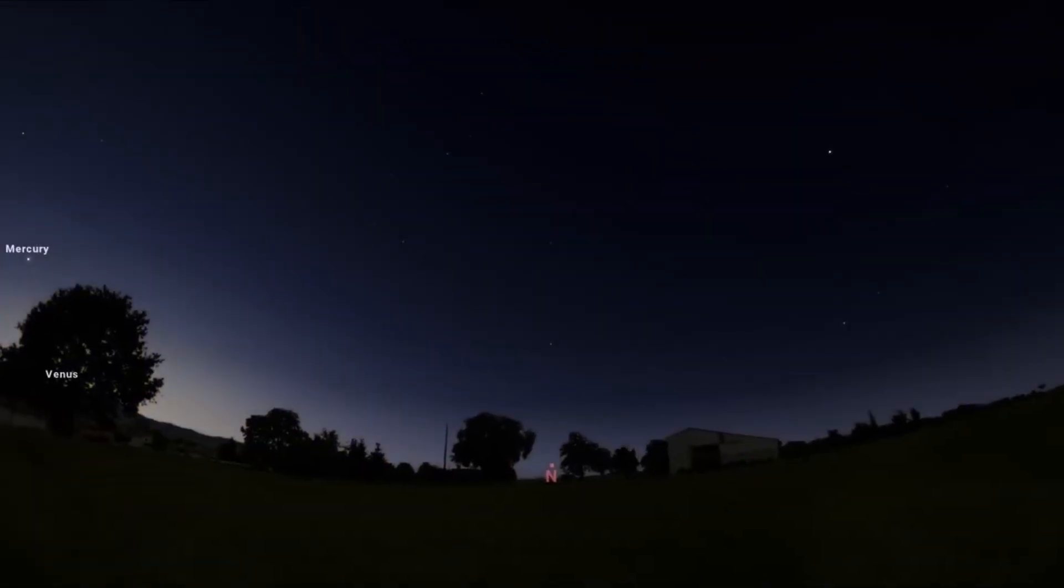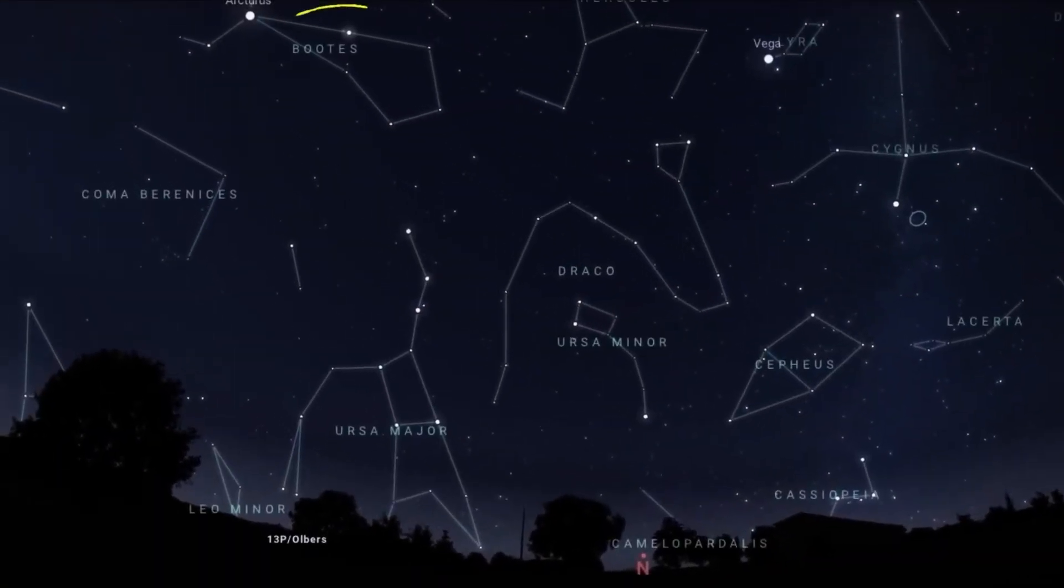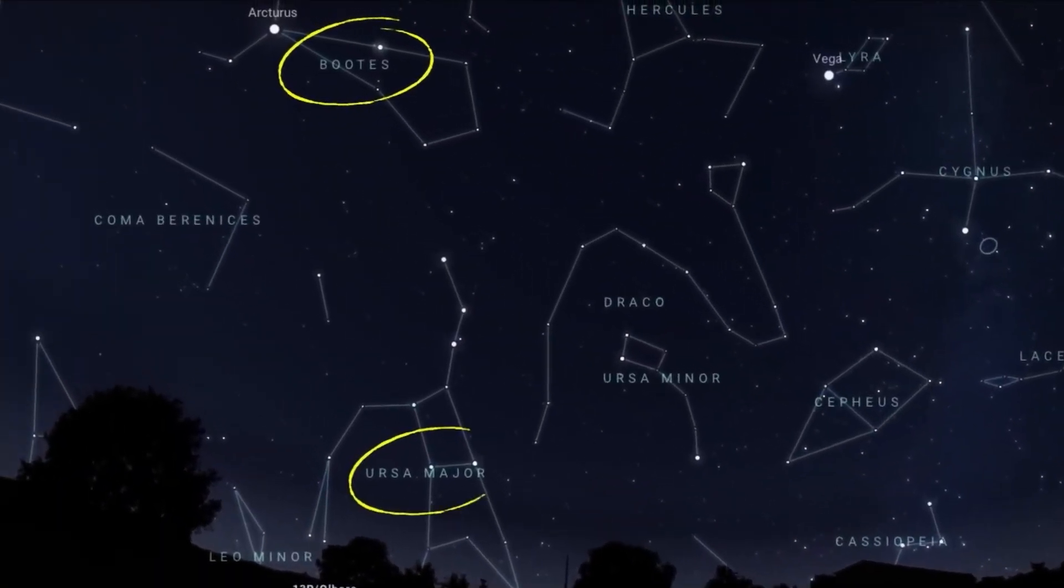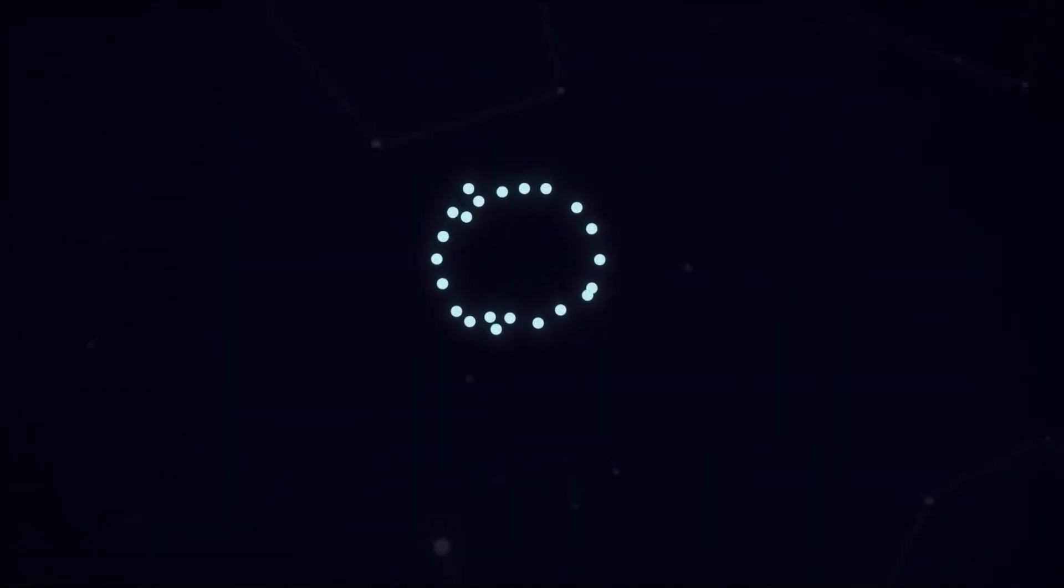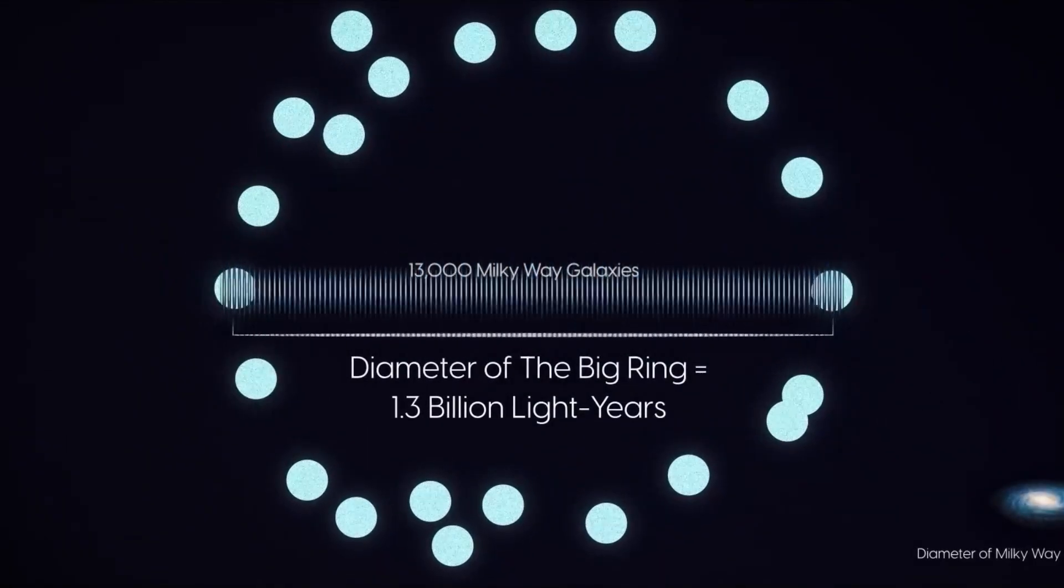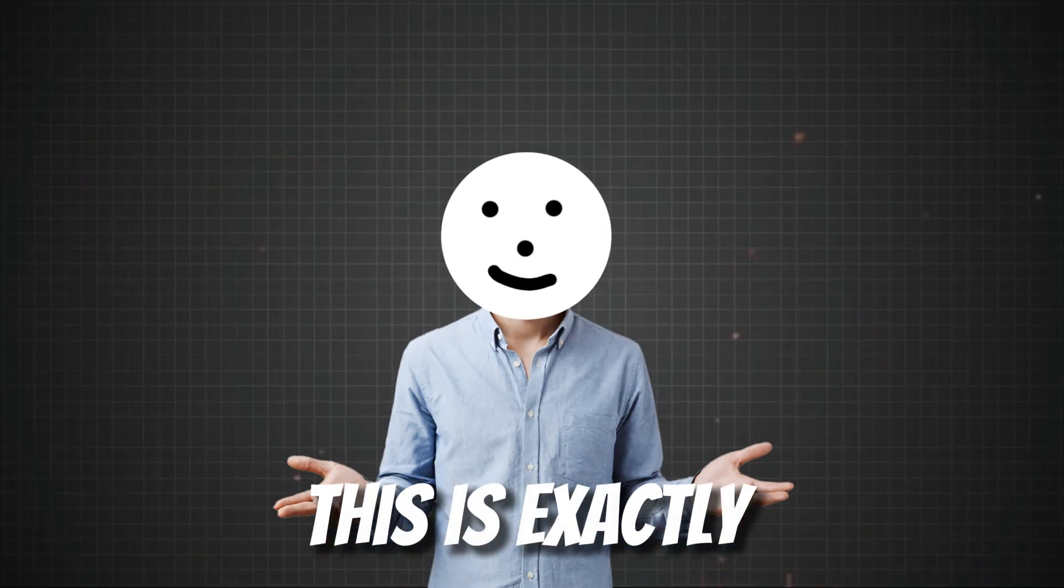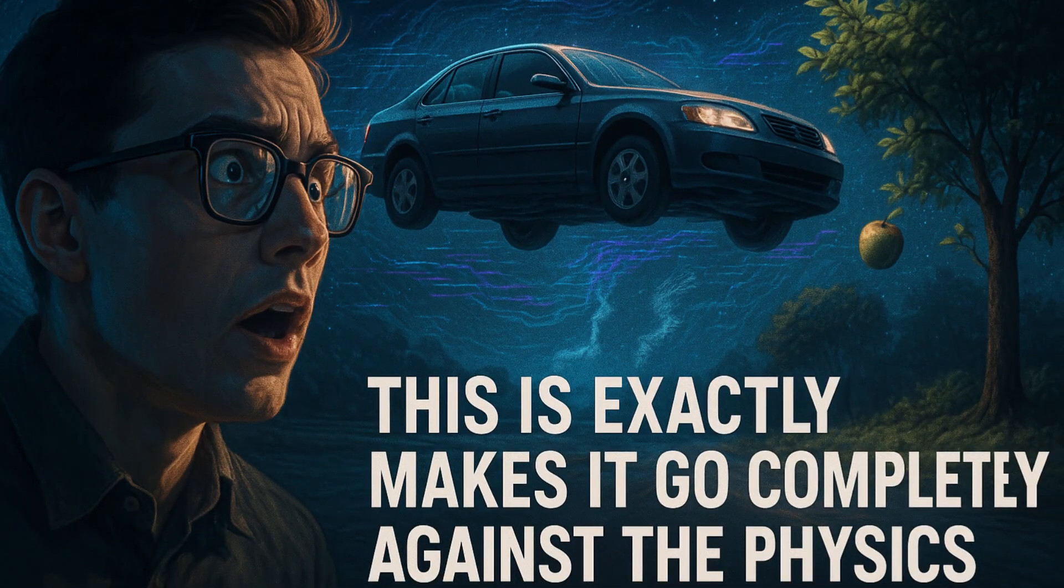Look at the night sky towards the north. If you carefully observe between the constellations of booties and Ursa Major, you will see a large ring-like structure. This is called the Big Ring. It is so massive that estimates suggest that to measure its width, we would need to line up about 13,000 Milky Way galaxies. This is exactly what makes it go completely against the principles of physics.